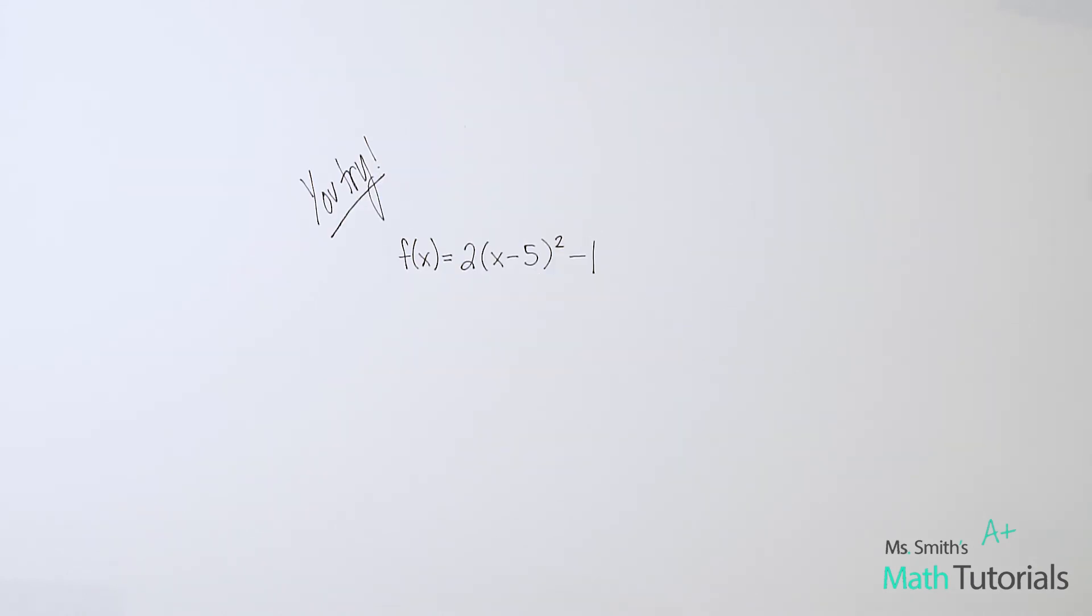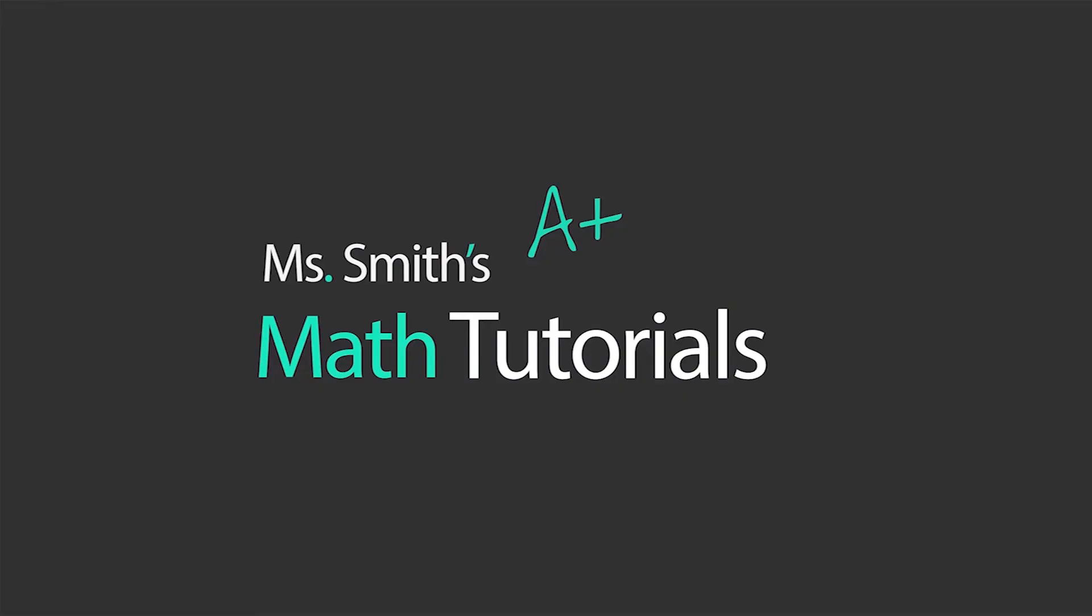Here's one for you guys to try. I've given you a quadratic in vertex form, f(x) = 2(x-5)² - 1. So I want you to go ahead and try writing that in standard form using those same steps we just used on the last three equations. I will write the answer in the video description below. This has been Ms. Smith's Math Tutorials.